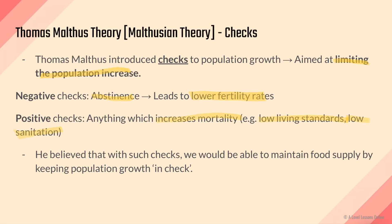Negative checks are more of a prevention strategy, while positive checks are more of an adaptation strategy — looking at things that have already happened, meaning population has already grown, and putting in checks to reduce it. So although it says positive checks, it does connote a negative connotation. Negative checks prevent population from arriving in the first place through abstinence, leading to lower fertility. If population does come in, positive checks are introduced to reduce it directly. Malthus believed that with such checks, food supply could be maintained by keeping population growth in check.